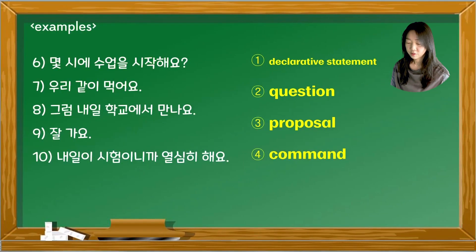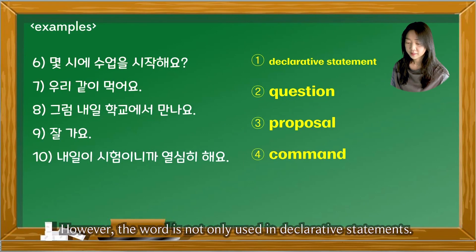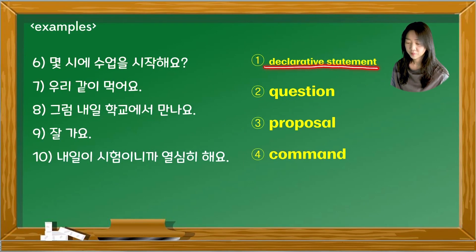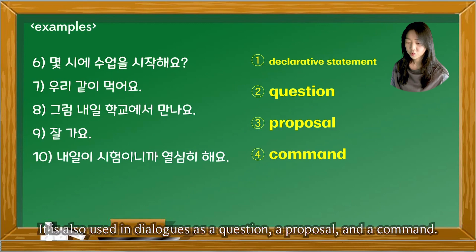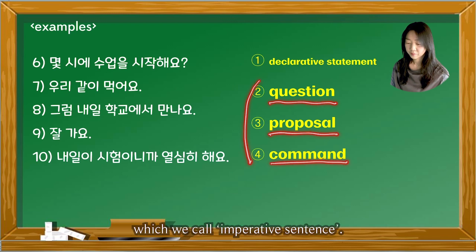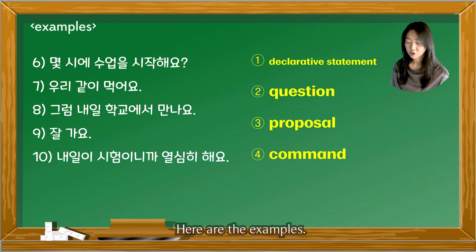제가 다음 달에 고향에 가요 — I am going home next month. However, the word is not only used in declarative statements. It is also used in dialogues as a question, a proposal, and a command, which we call an imperative sentence.